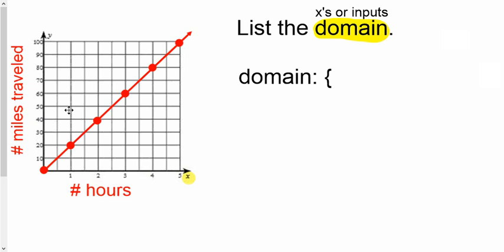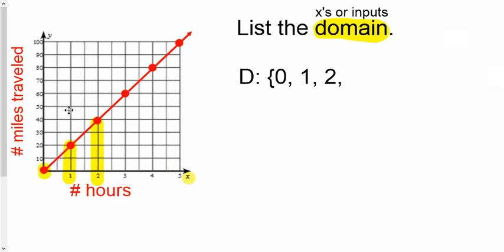So list the domain, or you can put a capital D there and put that nice little fancy bracket. And you would say, that's a zero value on the x-axis, so I'll put a zero there. Then you look at your next dot, that's right over the one on the x-axis, so I'll put a one. And it just kind of follows the pattern: two, three, four, five.